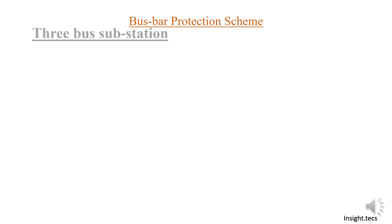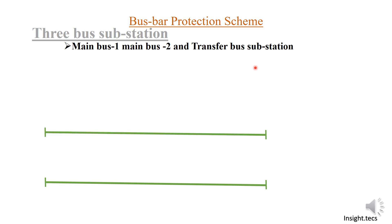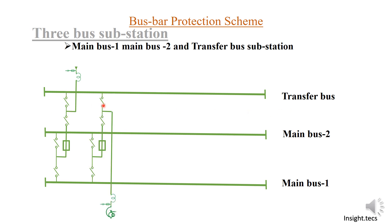Now before going into the second type of bus, we will discuss in detail about the three bus substation. This is Main Bus 1, Main Bus 2, and Transfer Bus substation. Similar to the two main bus scheme, we have Main Bus 1 and 2, and as we discussed with the auxiliary bus, we now have a transfer bus scheme — a combination of main bus and auxiliary bus. The arrangement has bus selector isolators 1 and 2 through which you select which bus to charge. One more isolator is added for the transfer bus.